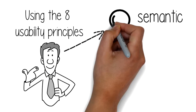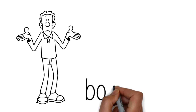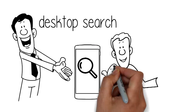What impact does cognition have on keyword intent? Is Google Knowledge Graph Semantic Search? What impact does boredom have on mobile use? Mobile Search has now overtaken desktop search, but what is the future of mobile search?